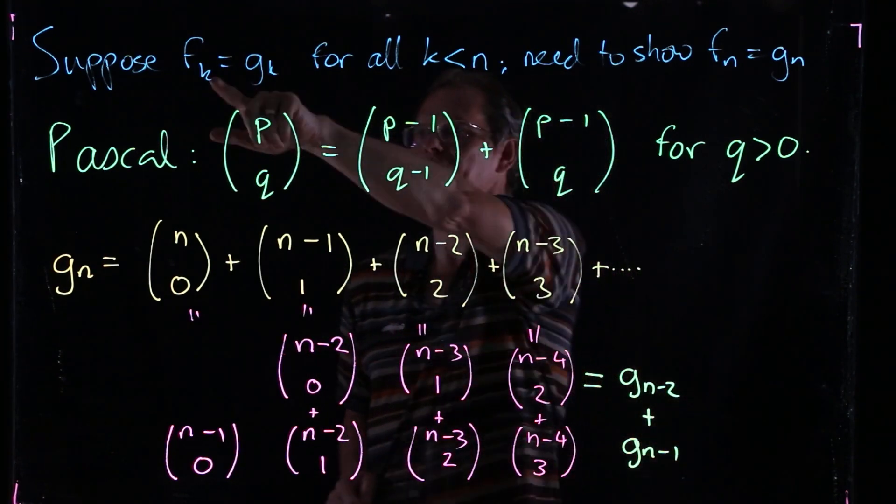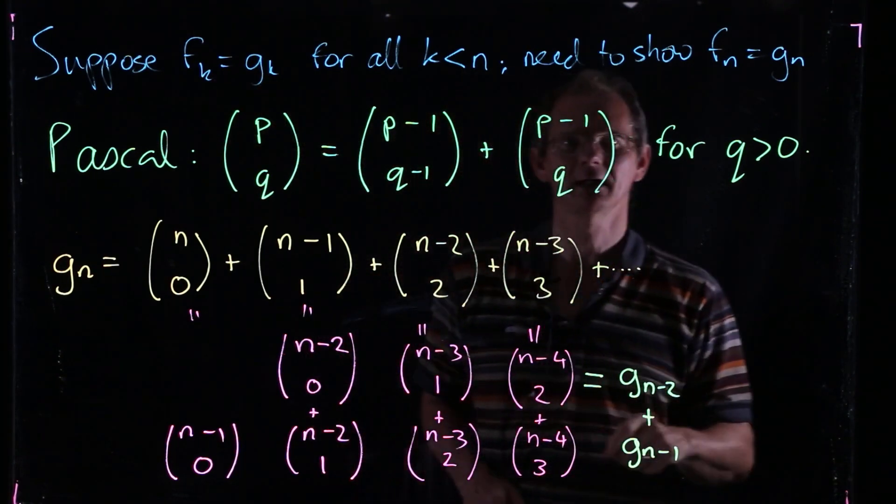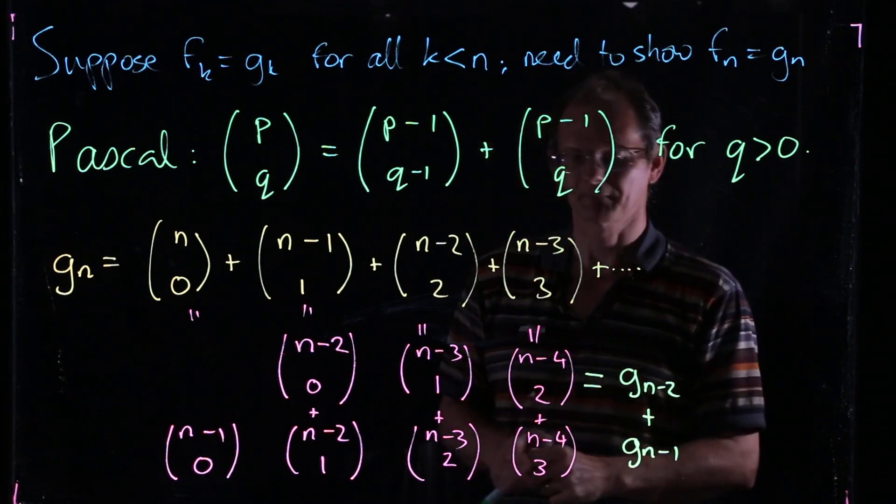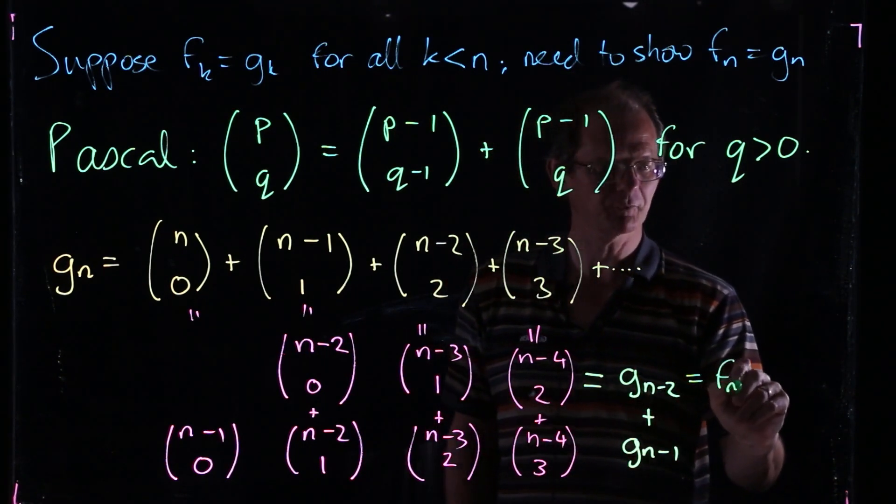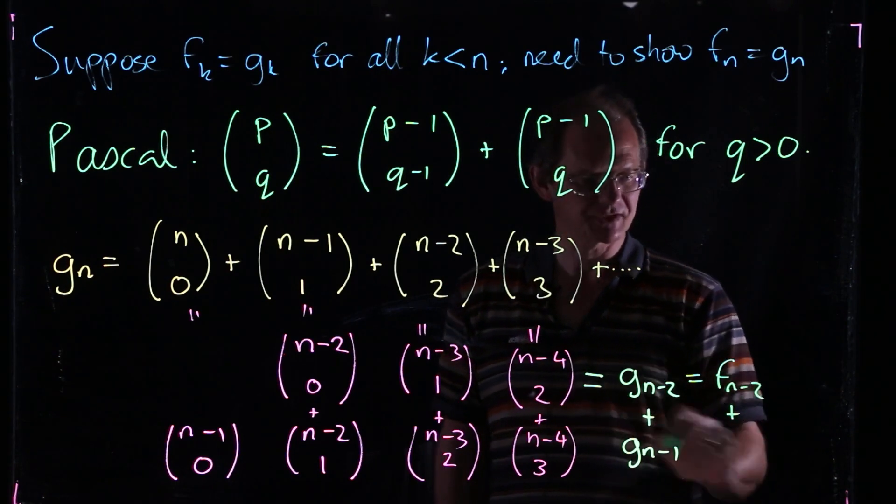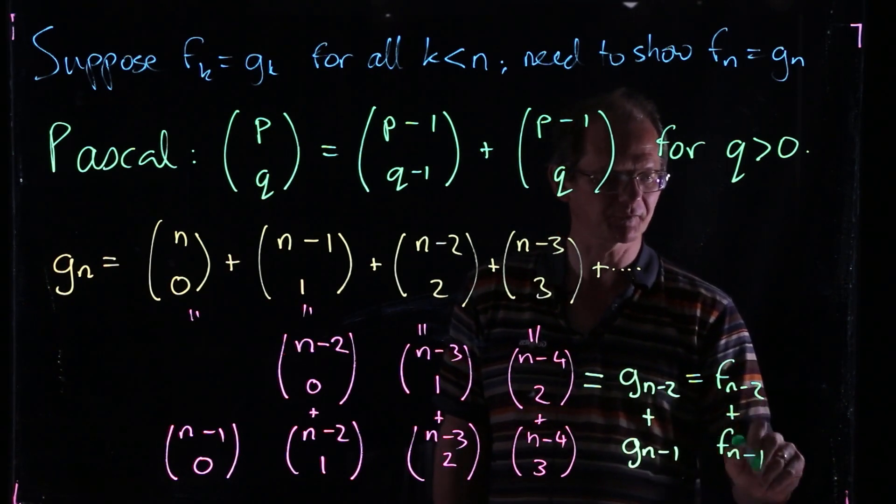But we've got this induction hypothesis that Fk is the same as Gk whenever k is less than n. So Gn-2 is the same as Fn-2. And Gn-1 is the same as Fn-1.